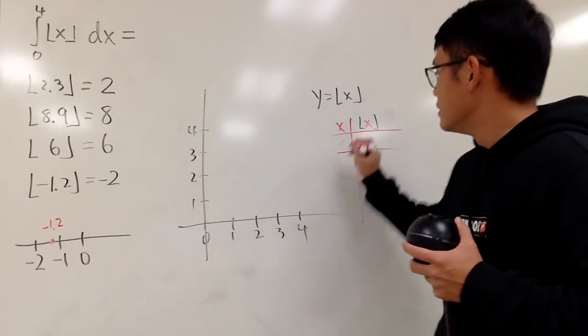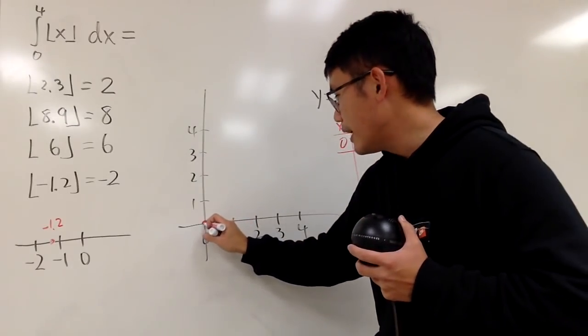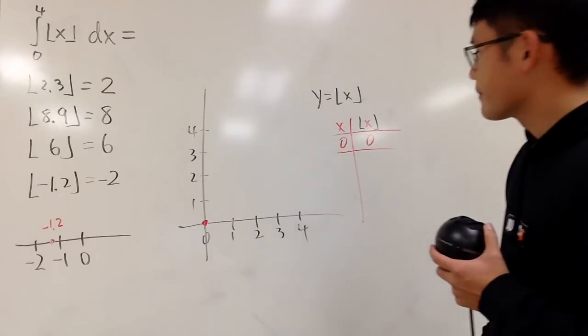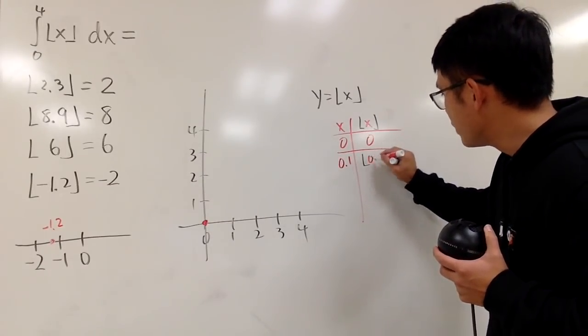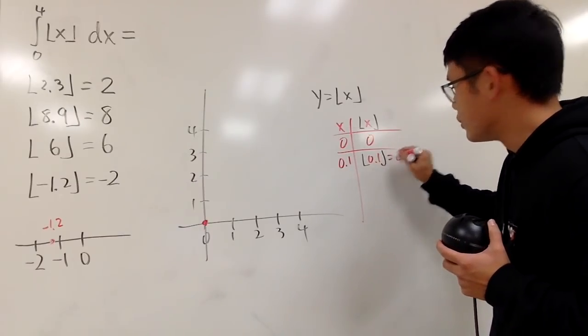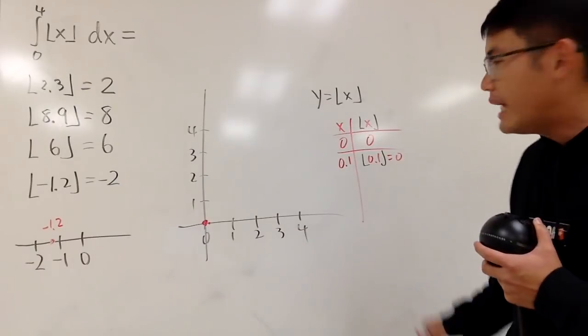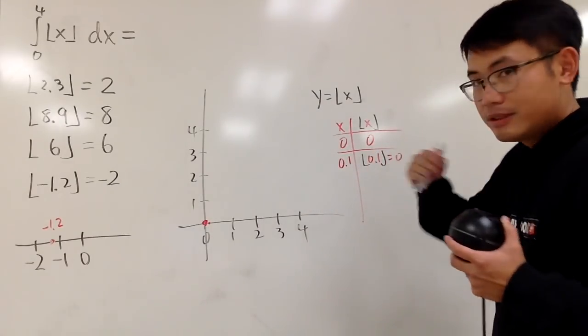When x is 0, floor of 0 is 0, that's good. So you have a 0, and that's a solid circle because you include 0, 0 here. But if x is 0.1, you plug into here the floor of 0.1, this is still 0. So when x is 0.1, you are still right here. And in fact, any values in between of 0 and something less than 1, such as 0.999, but let's just put down 0.9.